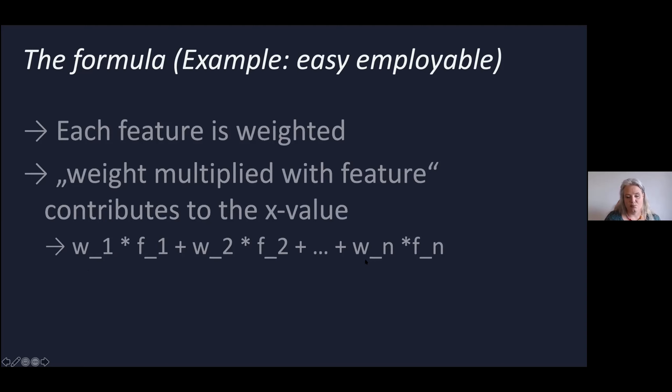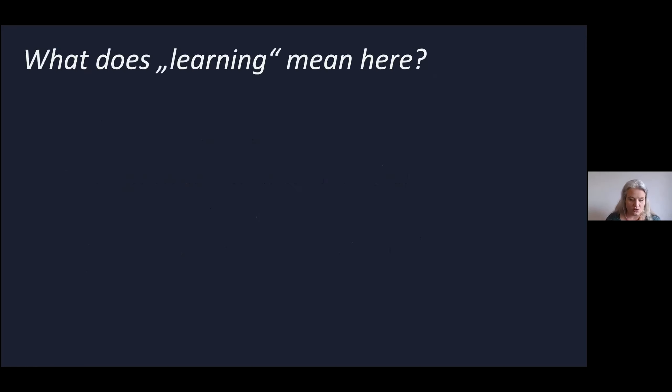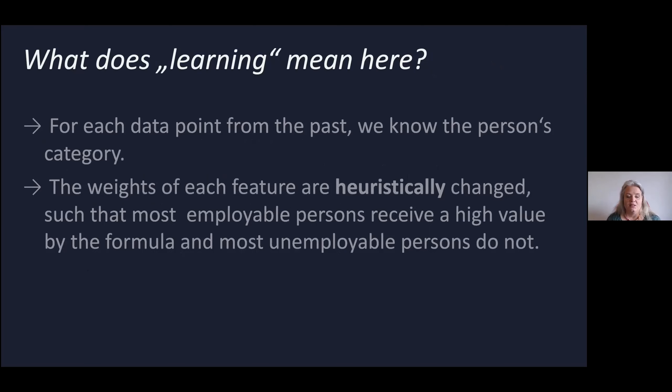The machine tries to find out what these weights are, and it does so by learning them. What does learning mean here? For each data point from the past, we know the person's category, whether they were easily employable, not employable at all, or anything in between. The weights of each feature are now heuristically changed, and I'll explain this word because it's very important. They're heuristically changed and we try to optimize the weight such that most employable persons receive a higher value and most unemployable persons get a low value.